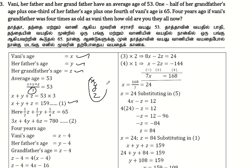We assign the variables: x is the grandfather's age, y is the father's age, and z is Vani's age. The first equation is x plus y plus z equals 159. The second condition states one half x plus one third y plus one fourth z is equal to 65.